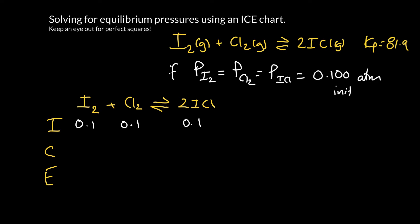Now on the change line we don't know what direction the change is going to be, so we need to calculate the reaction quotient. The reaction quotient, or Qp, we just use the actual pressures of everything. So there's two ICl, so we square that one. There is one iodine and one chlorine, so we don't have to square those. Everything is 0.1, so essentially it's 0.1 squared over 0.1 times 0.1. We can see that's just equal to 1.